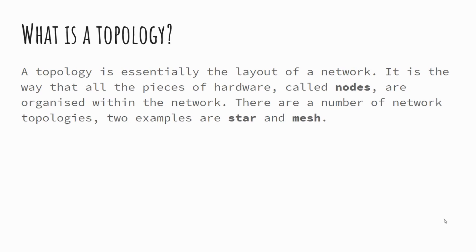So first of all, what is a topology? A topology is effectively the map of a network — it's how the devices are connected and laid out in order for our network to be understood. Each of the devices or pieces of hardware we refer to as a node. A node is simply a way of saying a device in a network, and we'll be using the term nodes throughout this presentation.